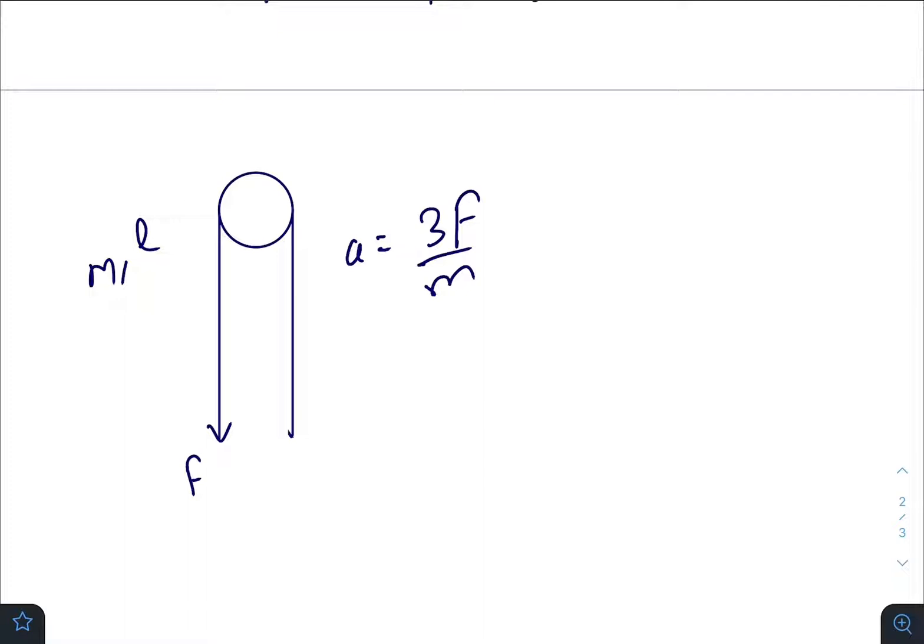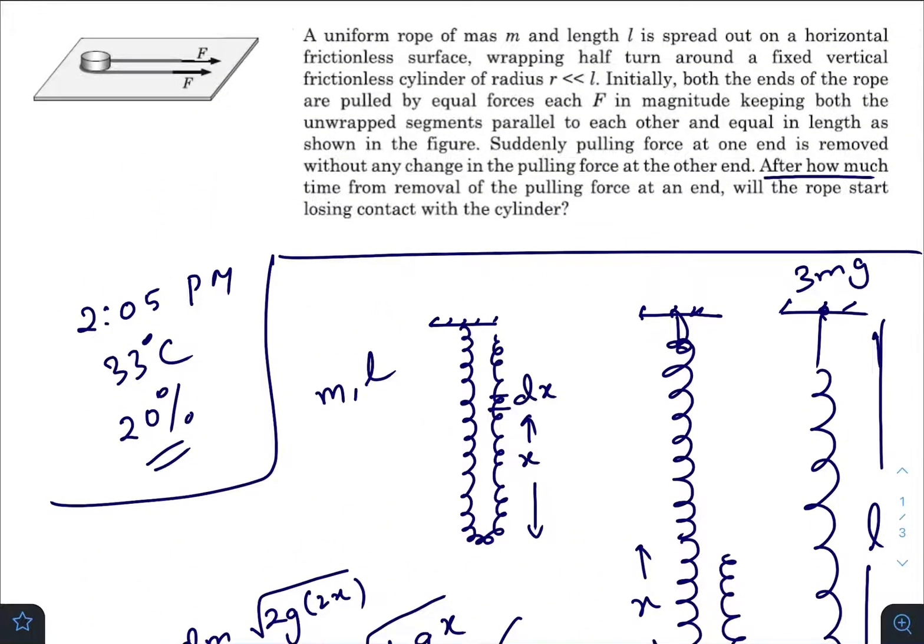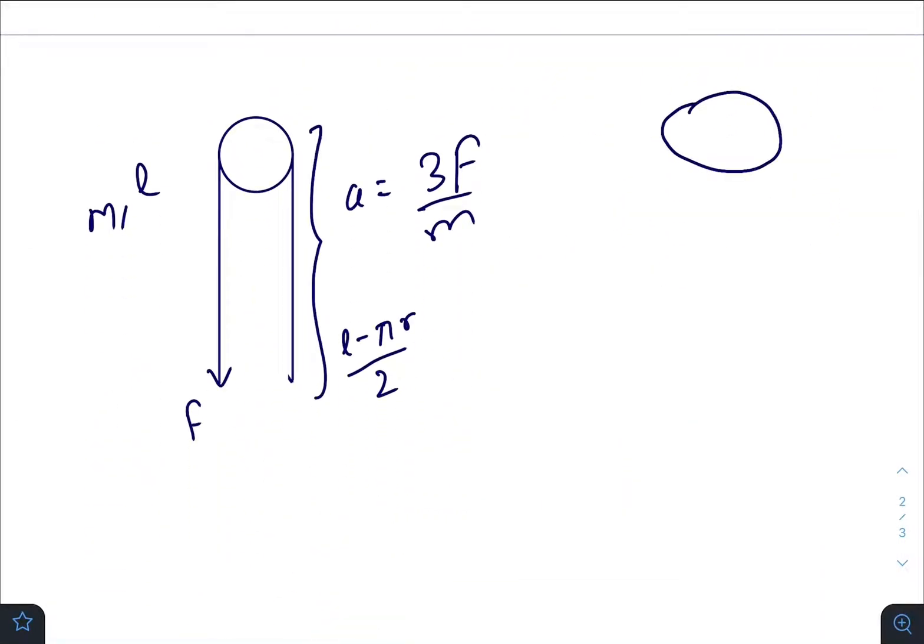Due to this acceleration, the rope needs to cover a displacement of this length, which is L minus πr/2. In our question they have asked after how much time from the removal of the pulling force at an end will the rope start losing contact. The rope will start losing contact when the situation will become this one—there would be no portion of the rope on the right hand side or on the left hand side.